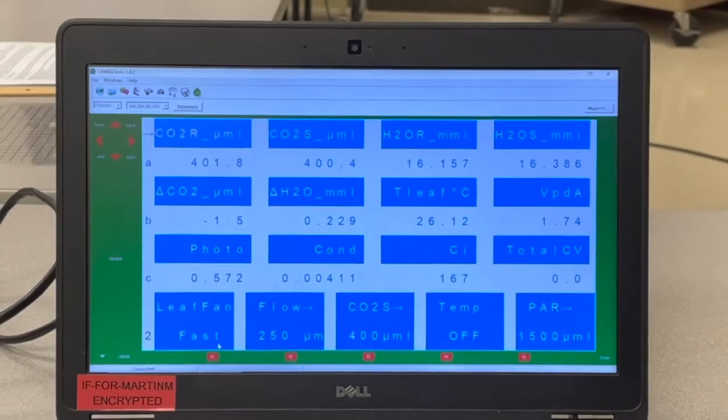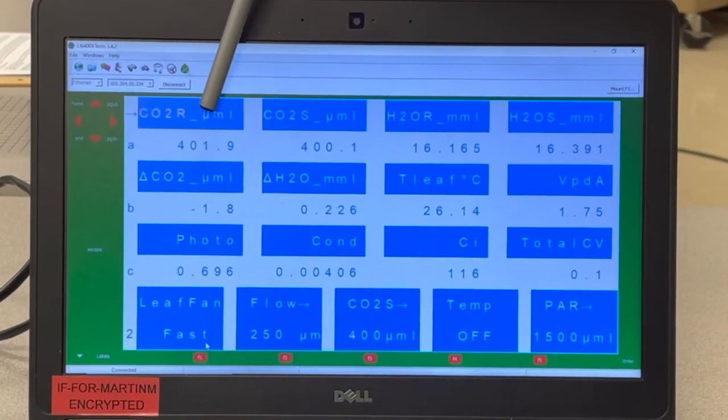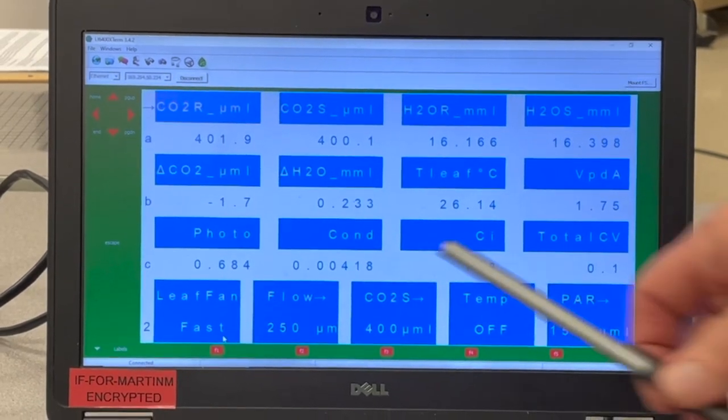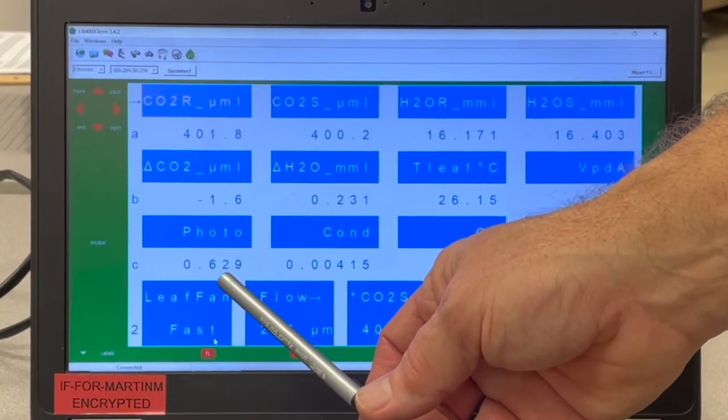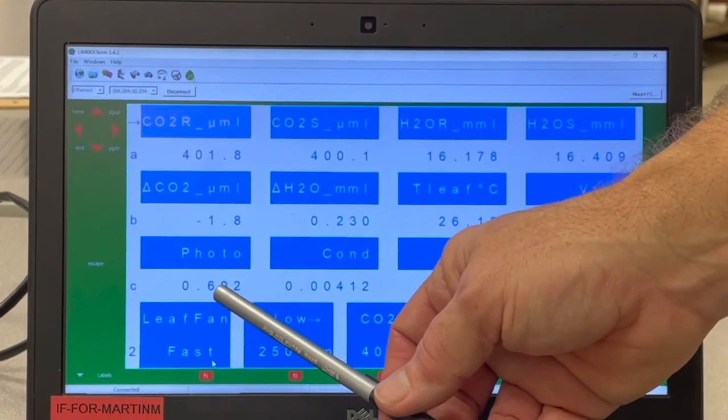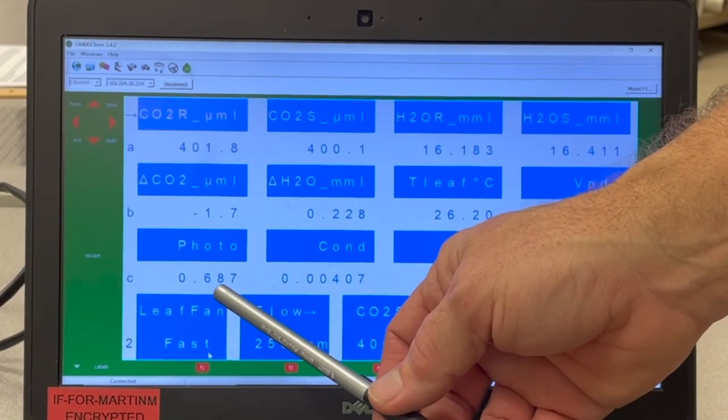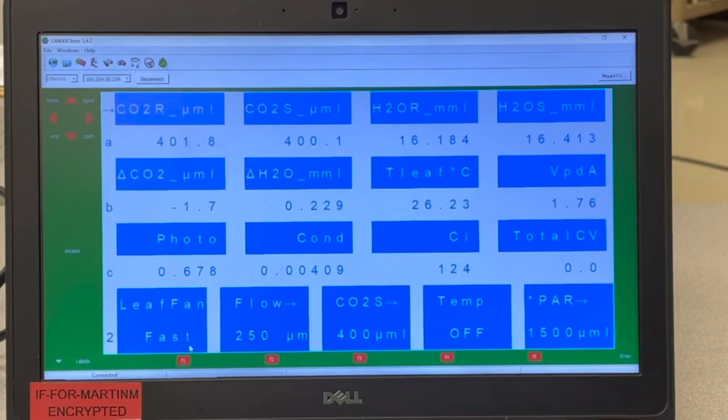What we see now is that CO2 sample is below CO2 reference, which means the leaf is photosynthesizing. This is the calculated net photosynthesis rate. It's a pretty low rate of net photosynthesis, but after equilibration it'll probably creep up a bit. This is the number that we would record for net photosynthesis rate of that leaf.